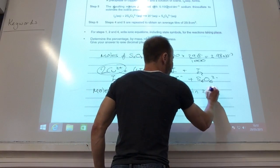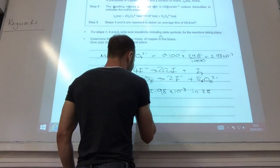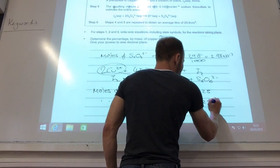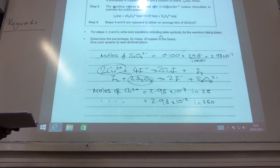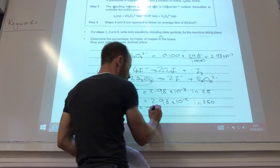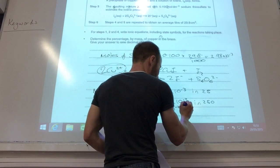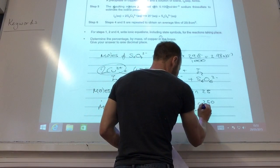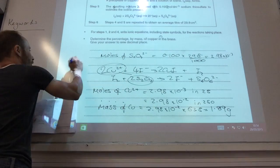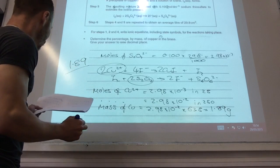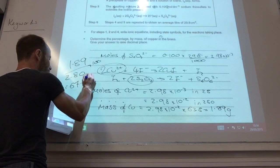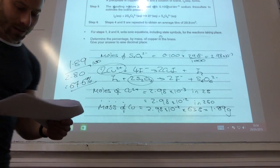That was in 25 centimeters cubed. So moles of copper, 2.98 times 10 to the minus three in 250, which was the original volume. They want me to convert that into a mass. So to do that, I times by the molar mass, which is 63.5, that gives me 1.89 grams. And then, easy peasy, lemon squeezy, 1.89 divided by 2.80 times 100 gives you 67.6%.